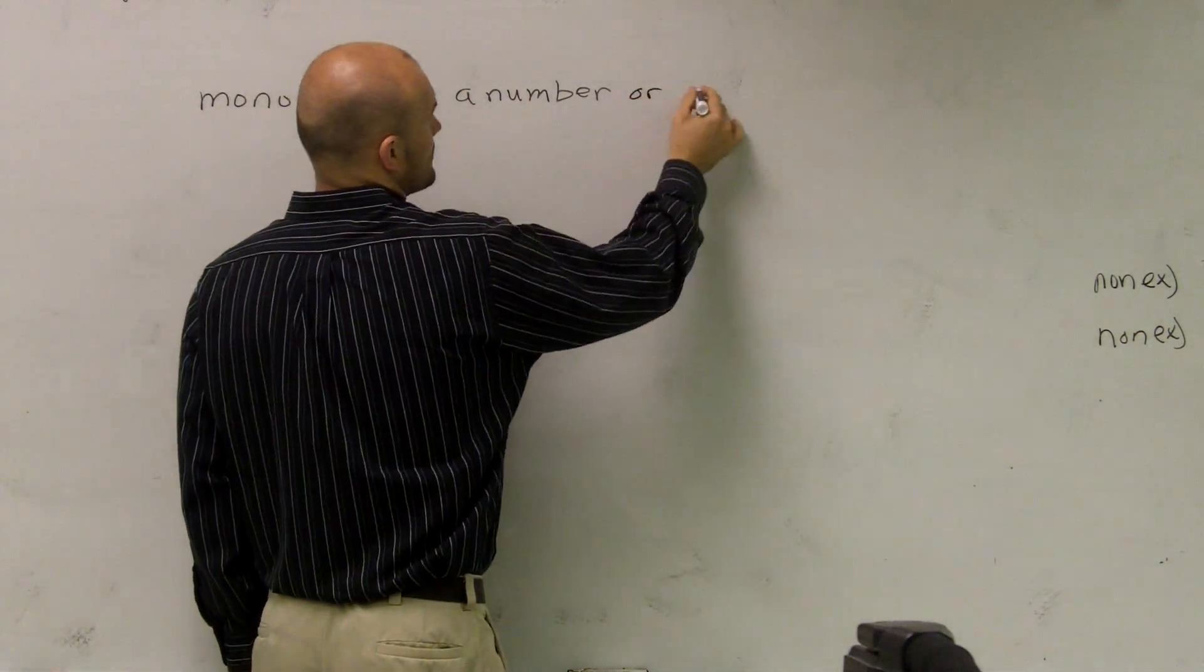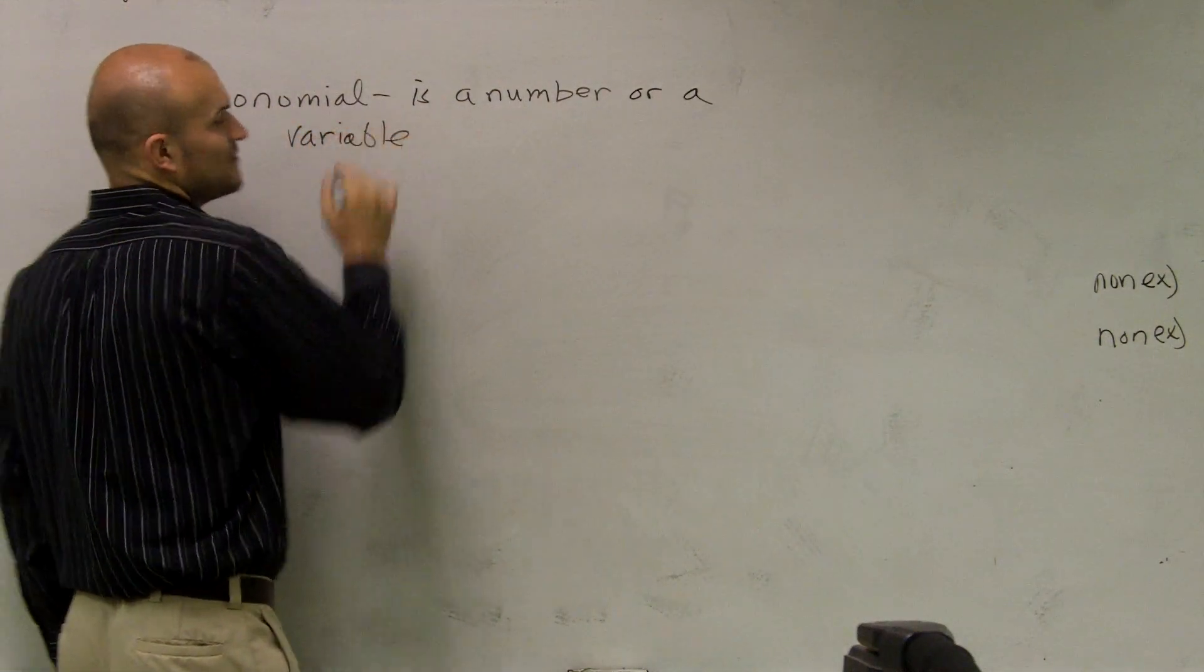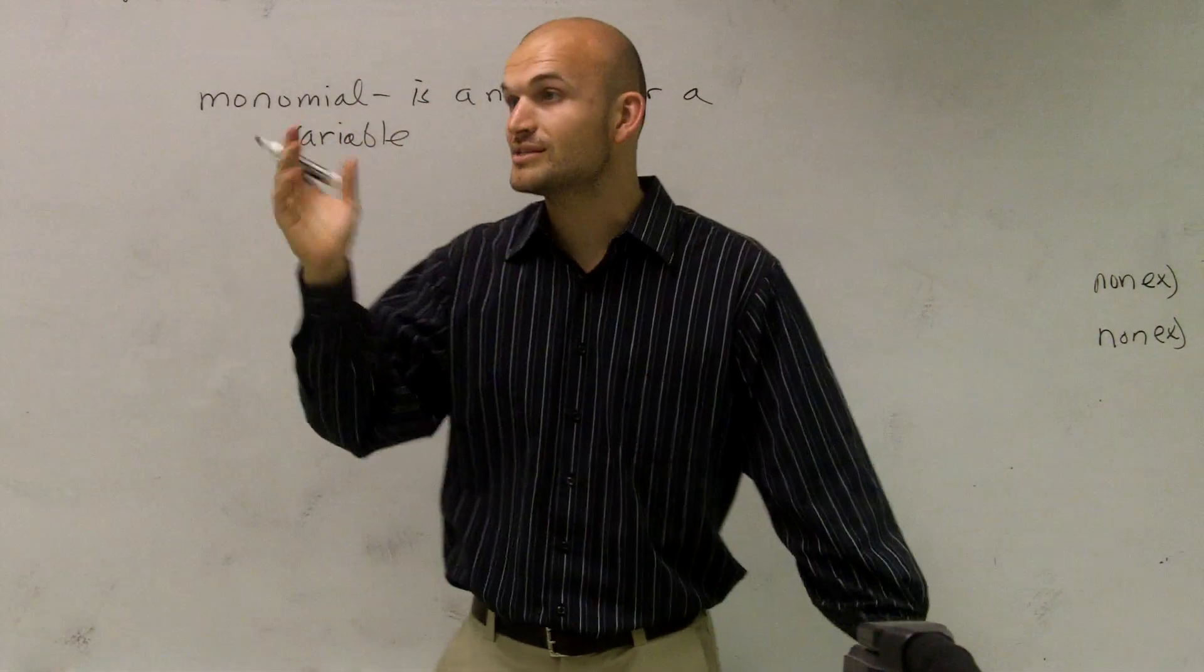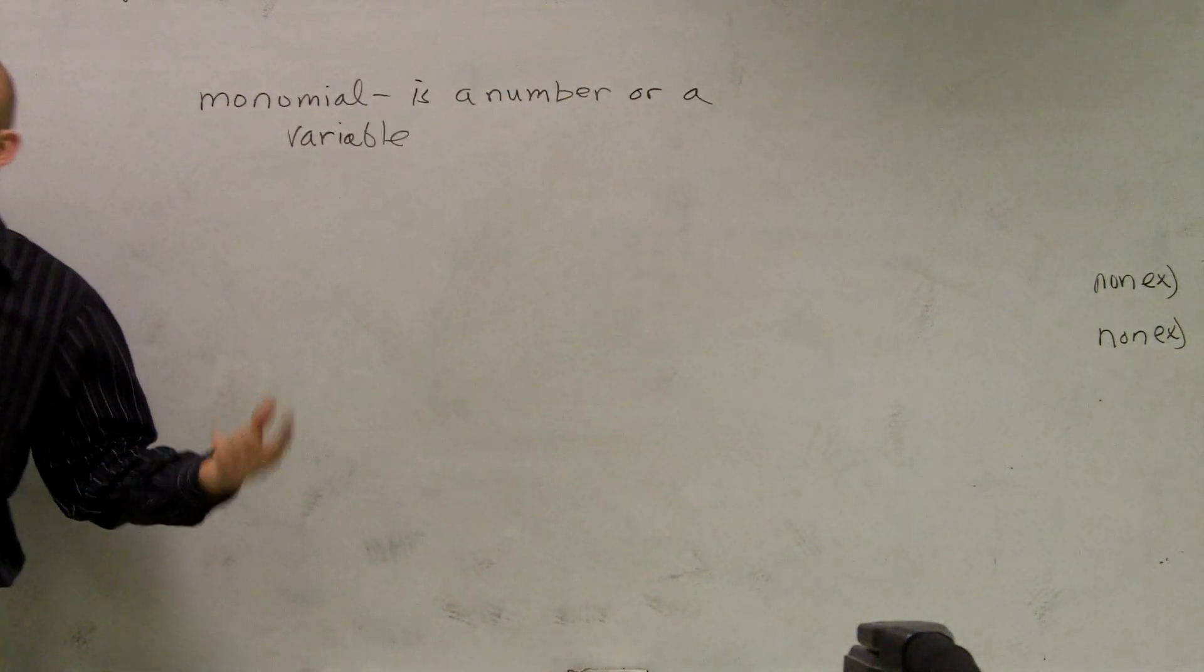It's also a variable. So when I first started talking about x's and y's, we could have just called them monomials. Those are all monomials. Just one number, one variable.